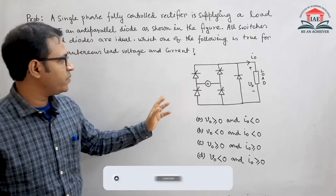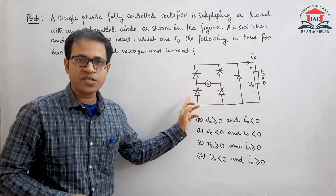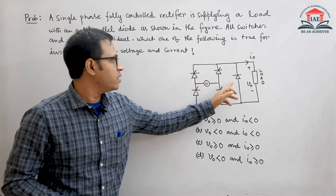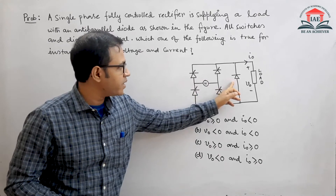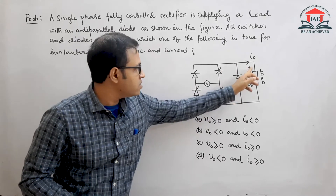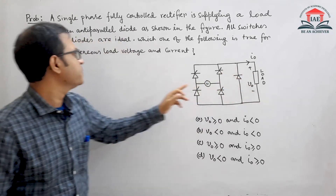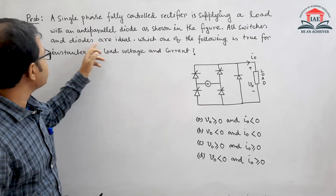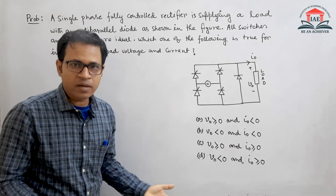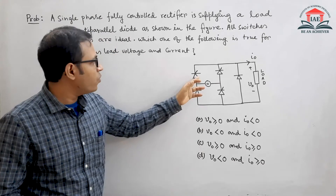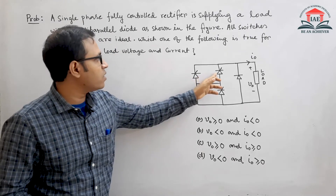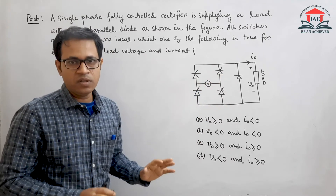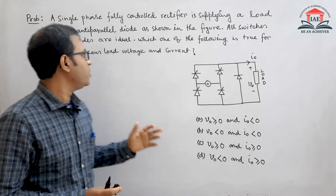What is shown in the figure? We see there are four thyristors connected and there is an input voltage source. There is a diode connected at the output side and there is a load connected. All the switches and the diodes are ideal, meaning the voltage drop across the thyristor or the diode is zero — they are not consuming any voltage drop.